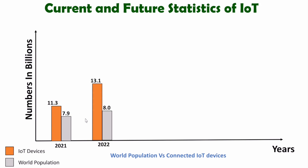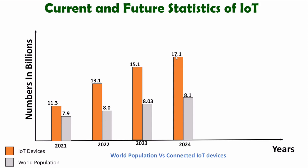In 2022, IoT devices increased to 13.1 billion, whereas the world's population reached 8.0 billion. It is expected that in 2023, the number of IoT devices will reach 15.1 billion, while the world's population reaches 8.03 billion. So with respect to world's population, IoT device growth is quite faster. In 2024, it is expected that the number of devices will reach 17.1 billion, whereas the world's population will reach 8.1 billion.